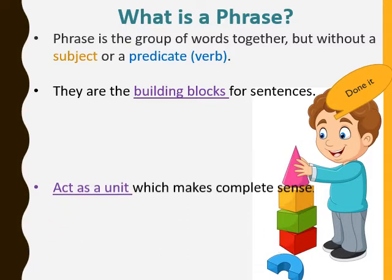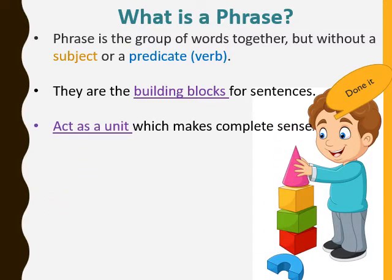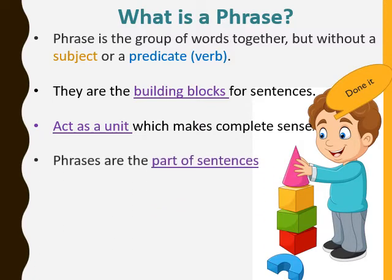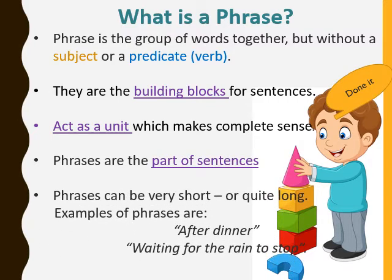A phrase acts as a unit which makes complete sense. This means a phrase is the small unit of a sentence which makes complete sense even if it's just a word. Phrases are the part of sentences and not the sentences themselves. Phrases can be very short or quite long. Examples of phrases are: after dinner, waiting for the rain to stop.